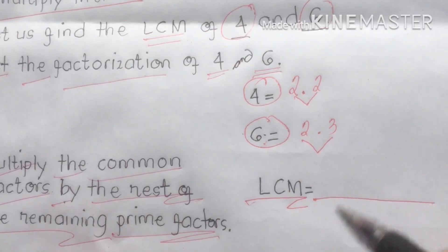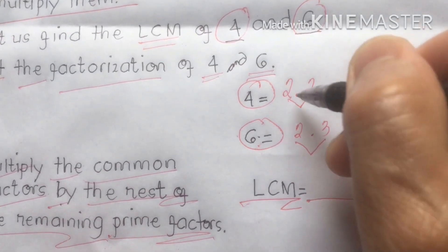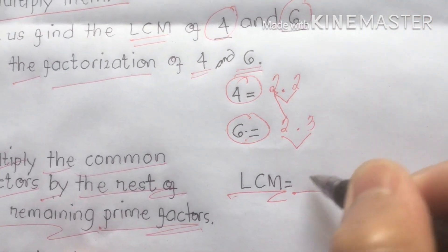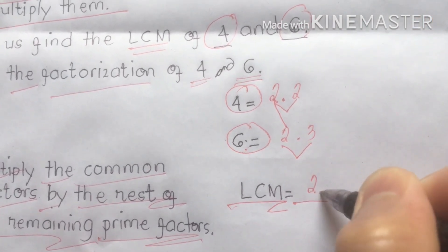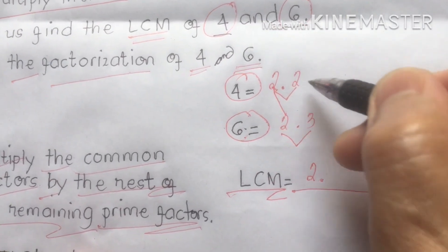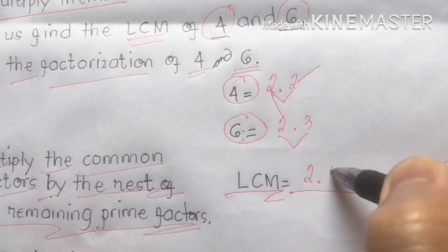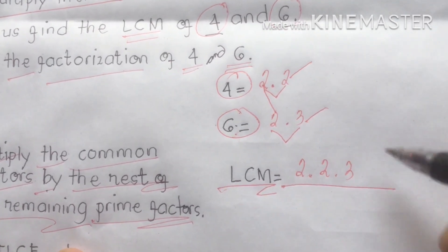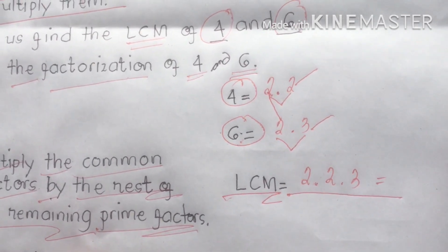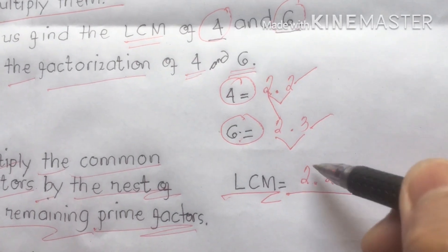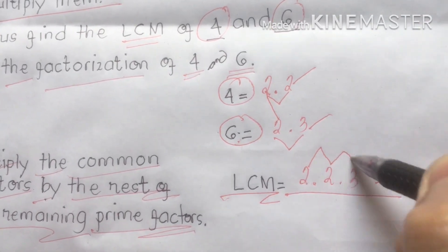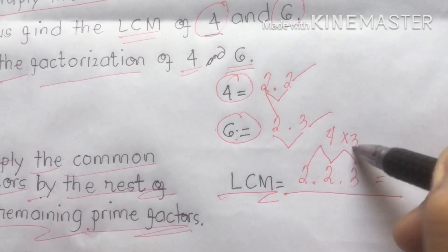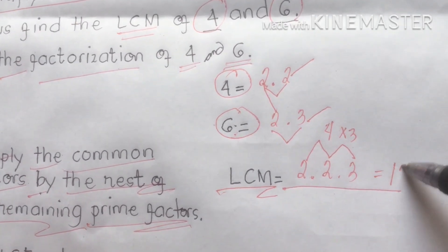Now we find the LCM. We get the common factor first — we have one 2 in common. Then we jot down the remaining 2 from 4 and the 3 from 6. To get the LCM, multiply: 2 × 2 × 3. Two times two is four, times three gives us 12.